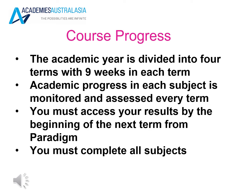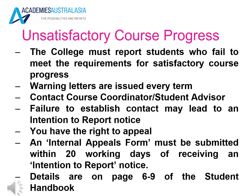The academic year is divided into weeks and terms. Academic progress in each subject is monitored and assessed every term. You must access your results by the beginning of the next term from Paradigm and you must complete all subjects. The college must report students who fail to meet the requirements for satisfactory course progress. Warning letters are issued every term. Contact your course coordinator or student advisor — failure to establish contact may lead to an intention to report notice. You have the right to appeal; an internal appeals form must be submitted within 20 working days of receiving an intention to report notice. For more information, refer to the student handbook.